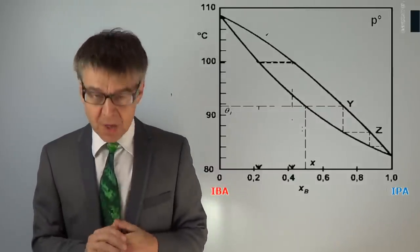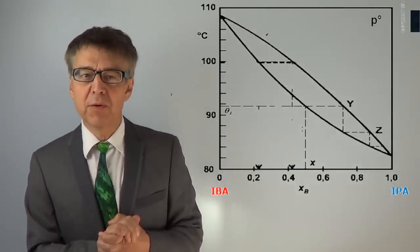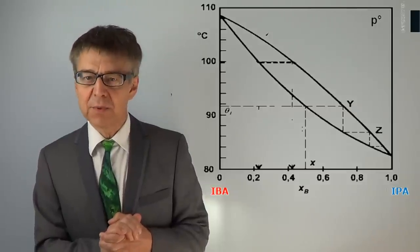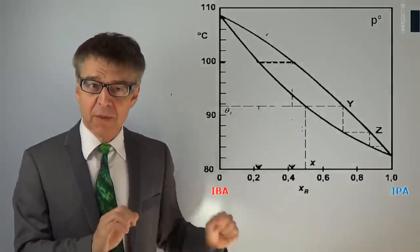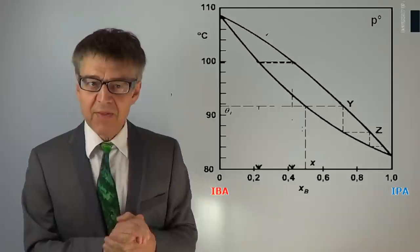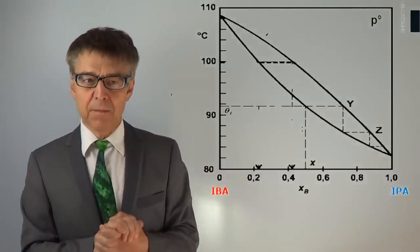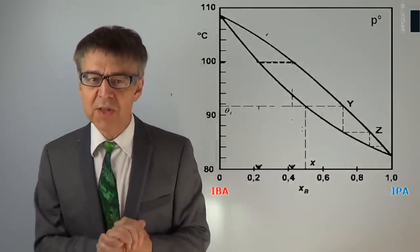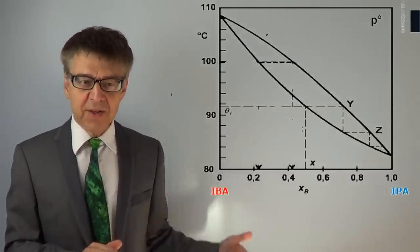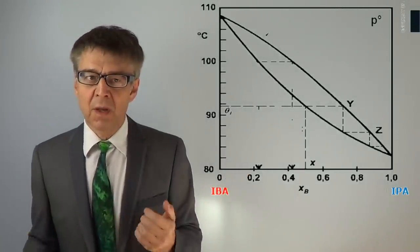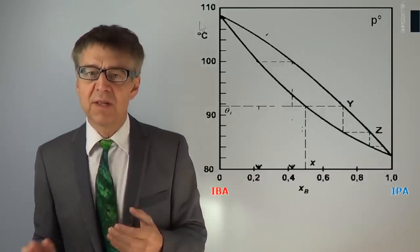How to read phase diagrams of mixtures — for example, this boiling point curve of the two components IBA and IPA. On the abscissa, concentration of the mixture is plotted. On the left-hand side there is pure IBA, on the right-hand side there is pure IPA. In between, all possible mixtures are described by the mole fraction X sub B. On the ordinate, temperature is plotted between 80 degrees and 110 degrees Celsius.